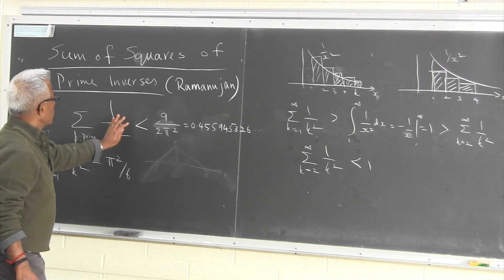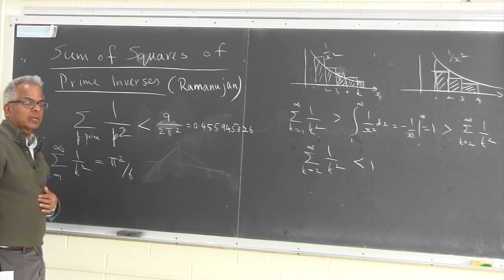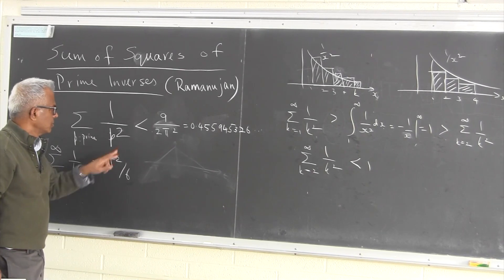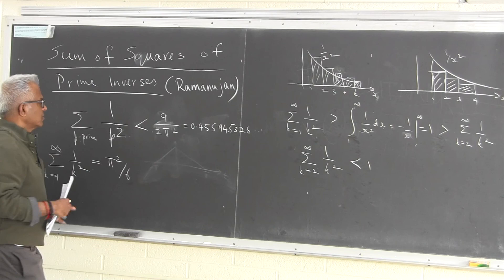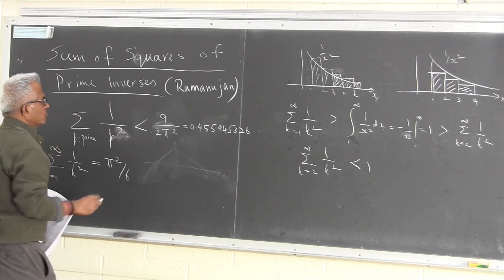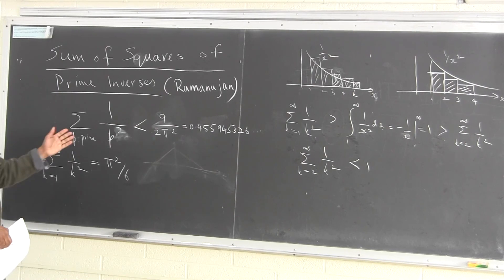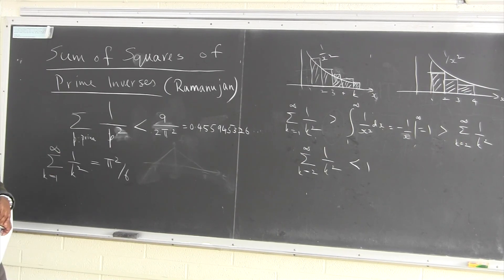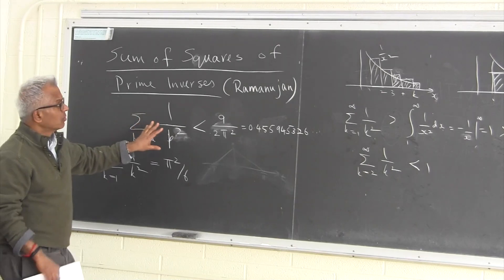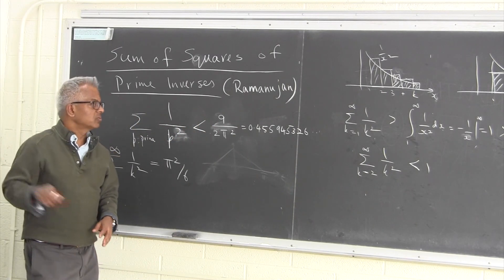So all you can say is that the result we are looking for is less than 0.45. Of course, as we know, the sum of 1/p (inverses of primes) diverges, so it's not summable. The next best result is that this sum of squares of prime inverses is a convergent series, and the exact value is unknown, but this gives a close bound.